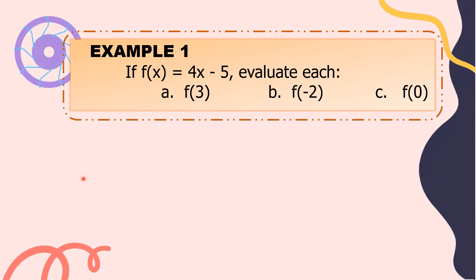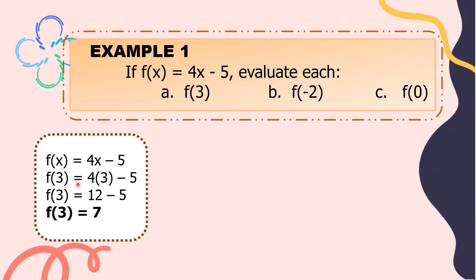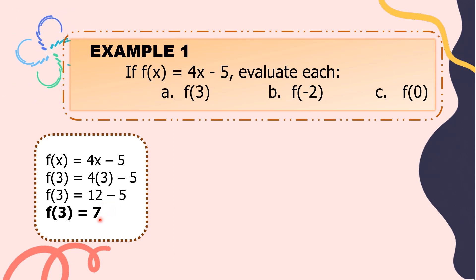For letter A, our function is f of x equals 4x minus 5. The value of x is 3, so we change x into 3. f of x becomes f of 3 equals 4 times 3 minus 5. 4 times 3 is equal to 12. 12 minus 5 equals 7. So, f of 3 equals 7.